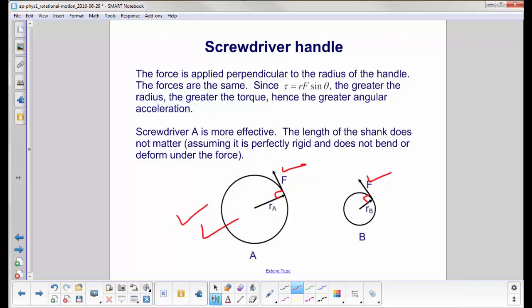Therefore, screwdriver A is more effective. So you would want a handle that has a greater diameter. The length of the shank doesn't really matter.